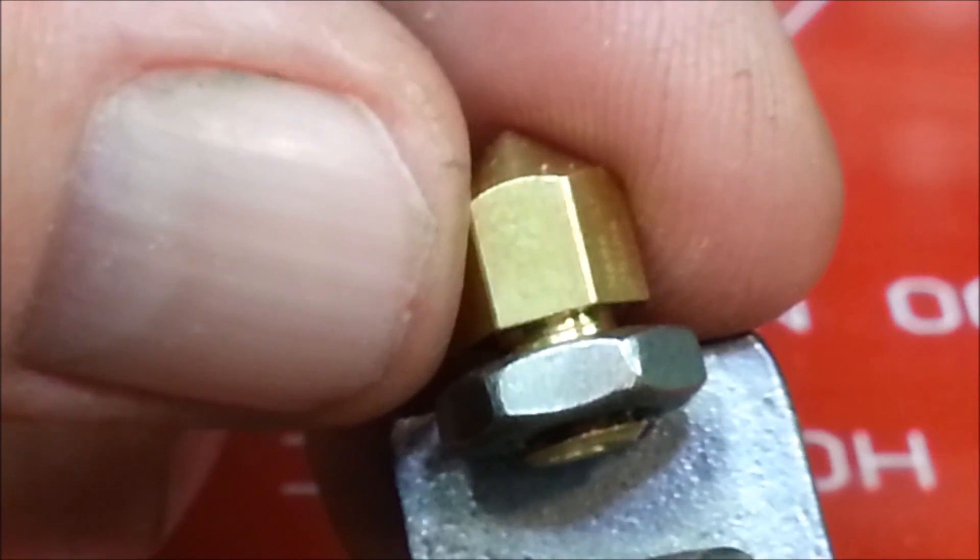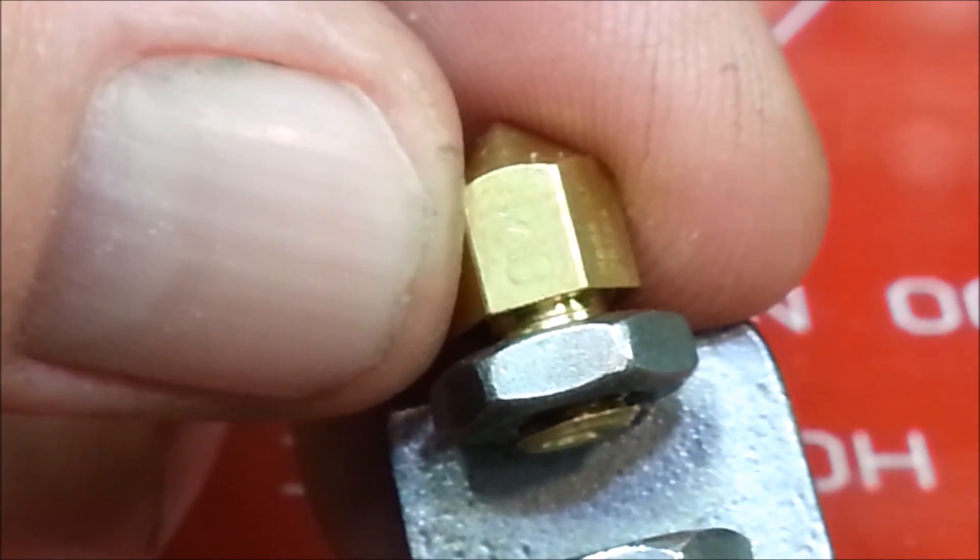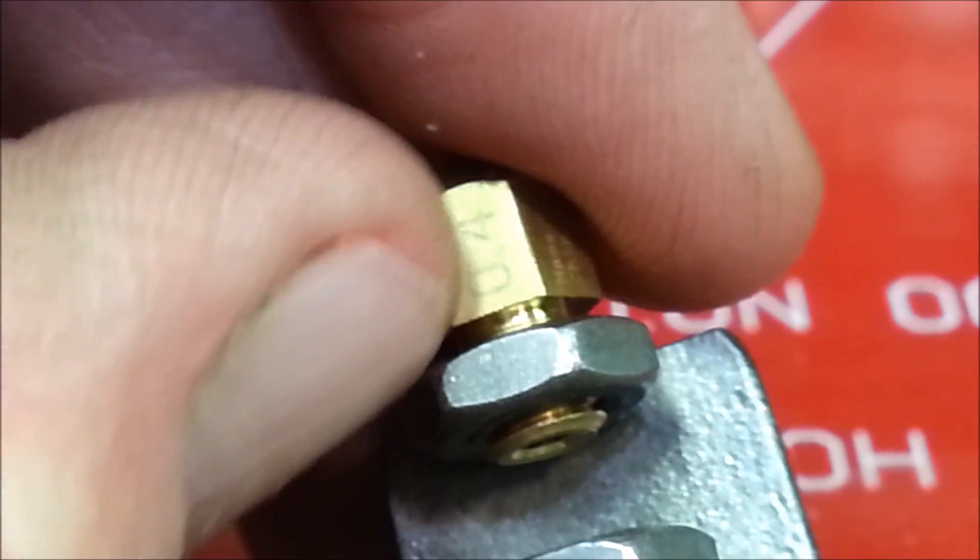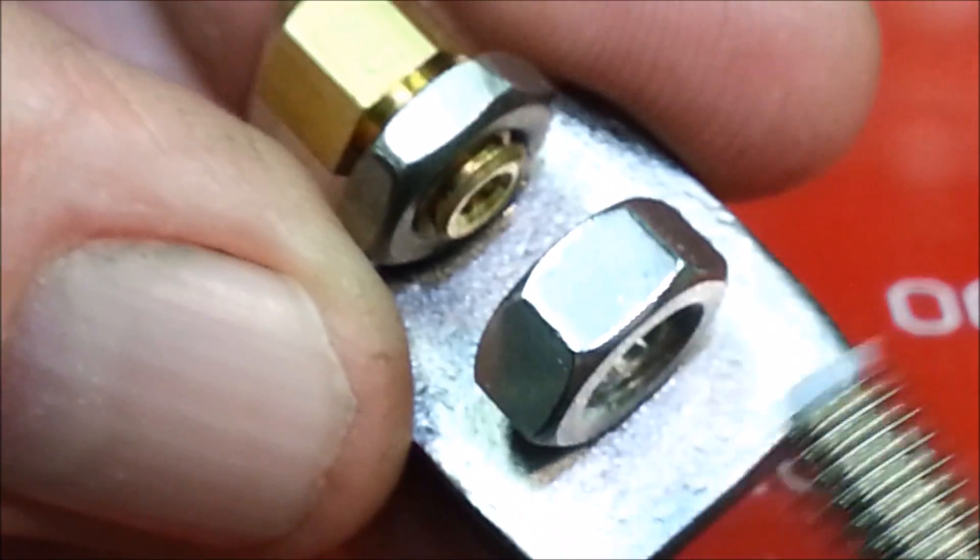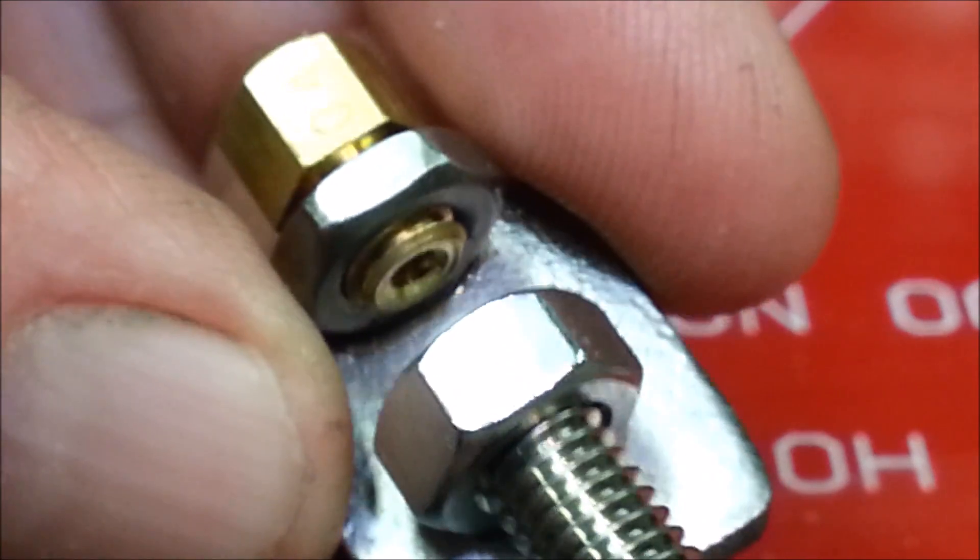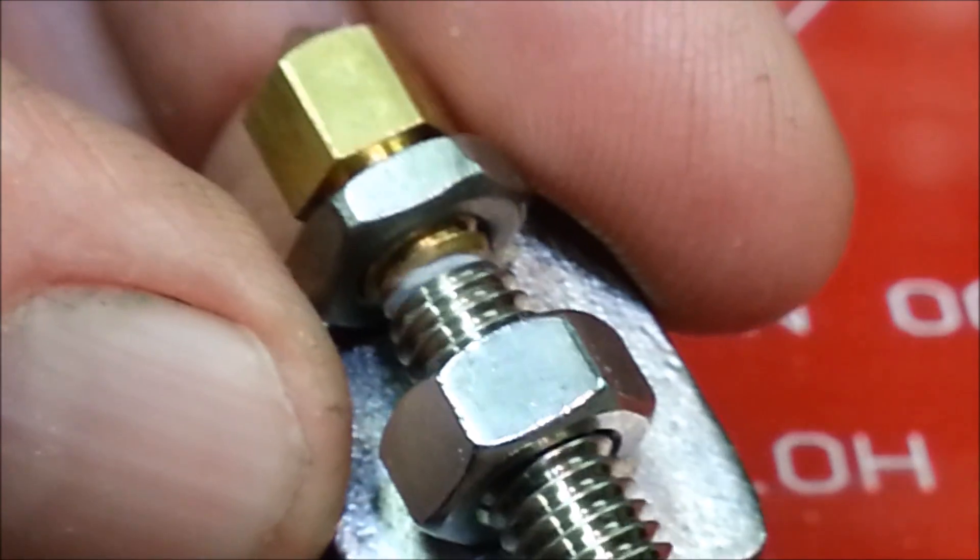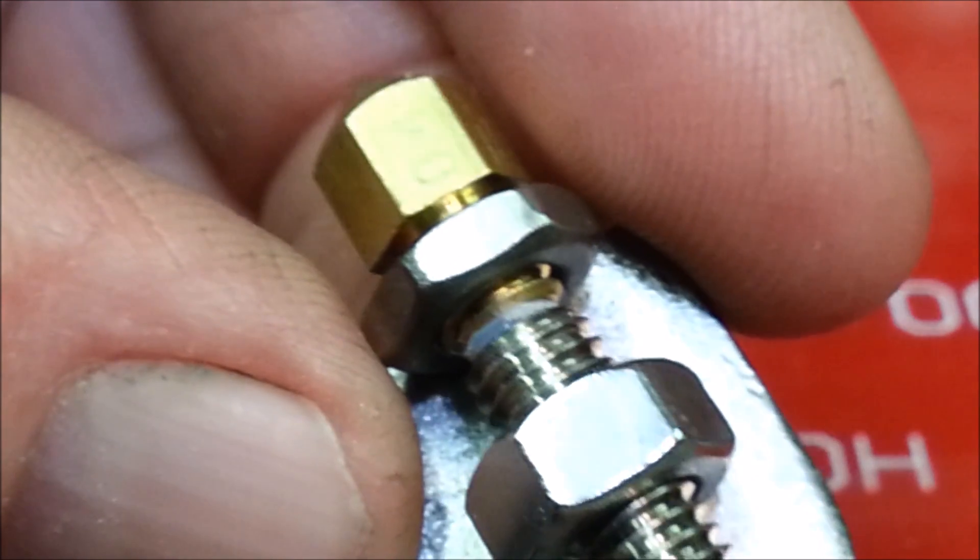And then I took my nozzle and I backed it off so that it had about a one millimeter or a little bit more gap between it and, consider this being like a heat block. So now when you screw the nozzle throat in, it butts up against the nozzle.